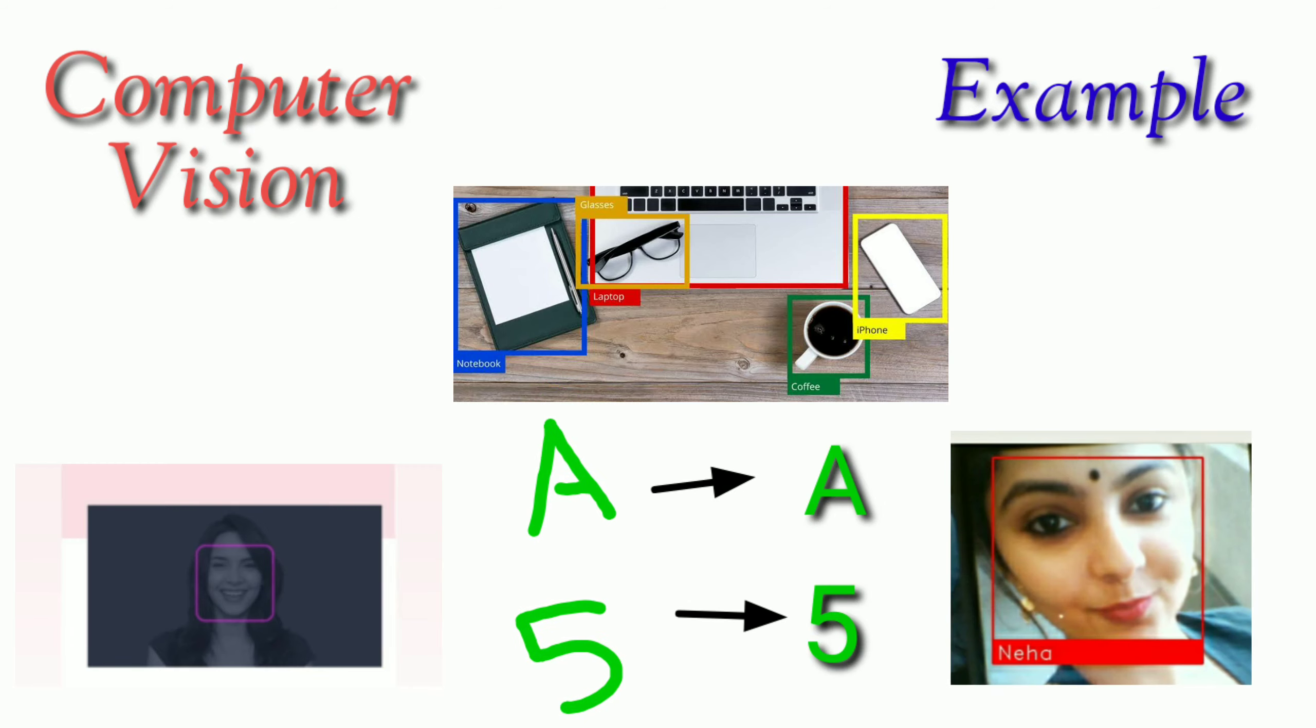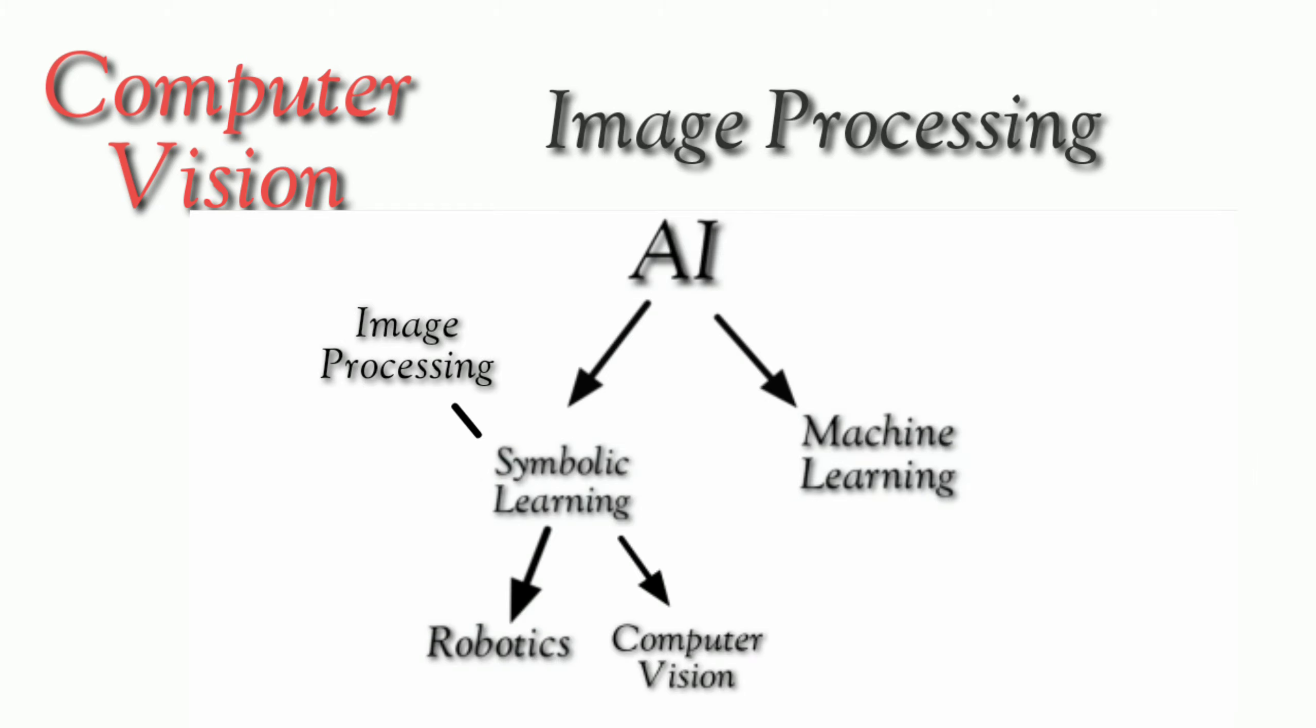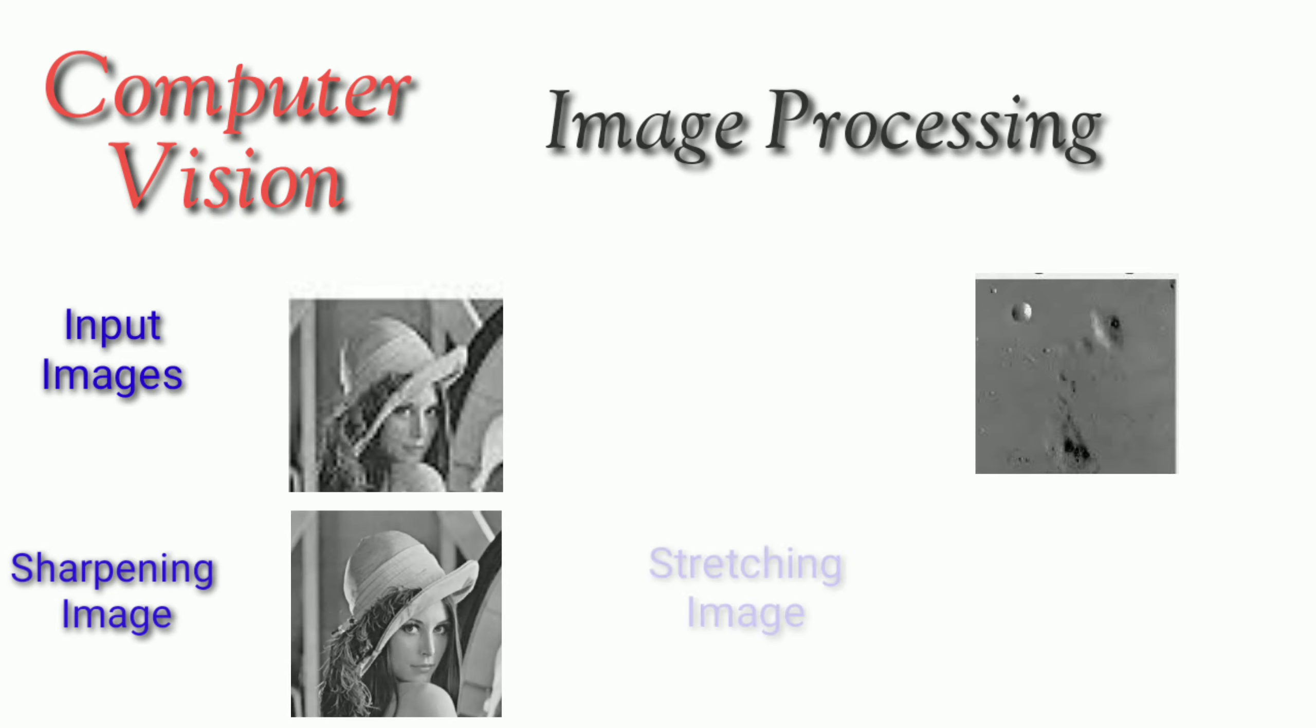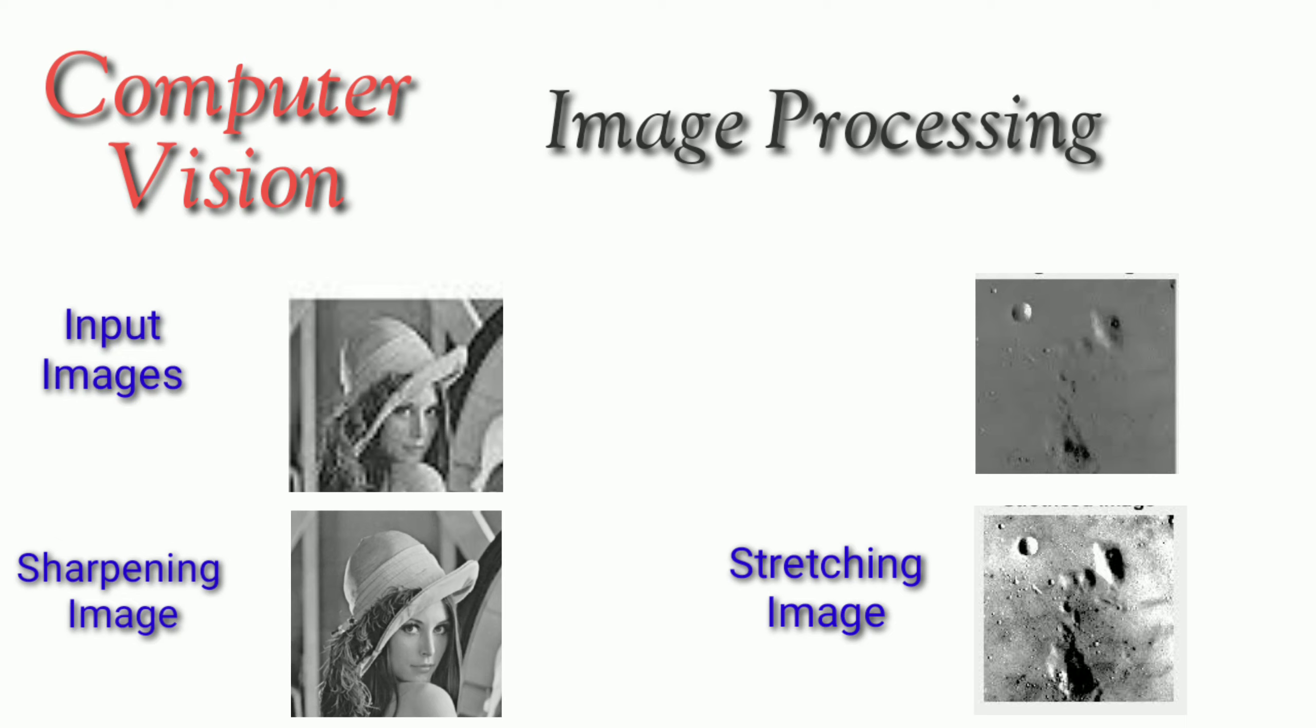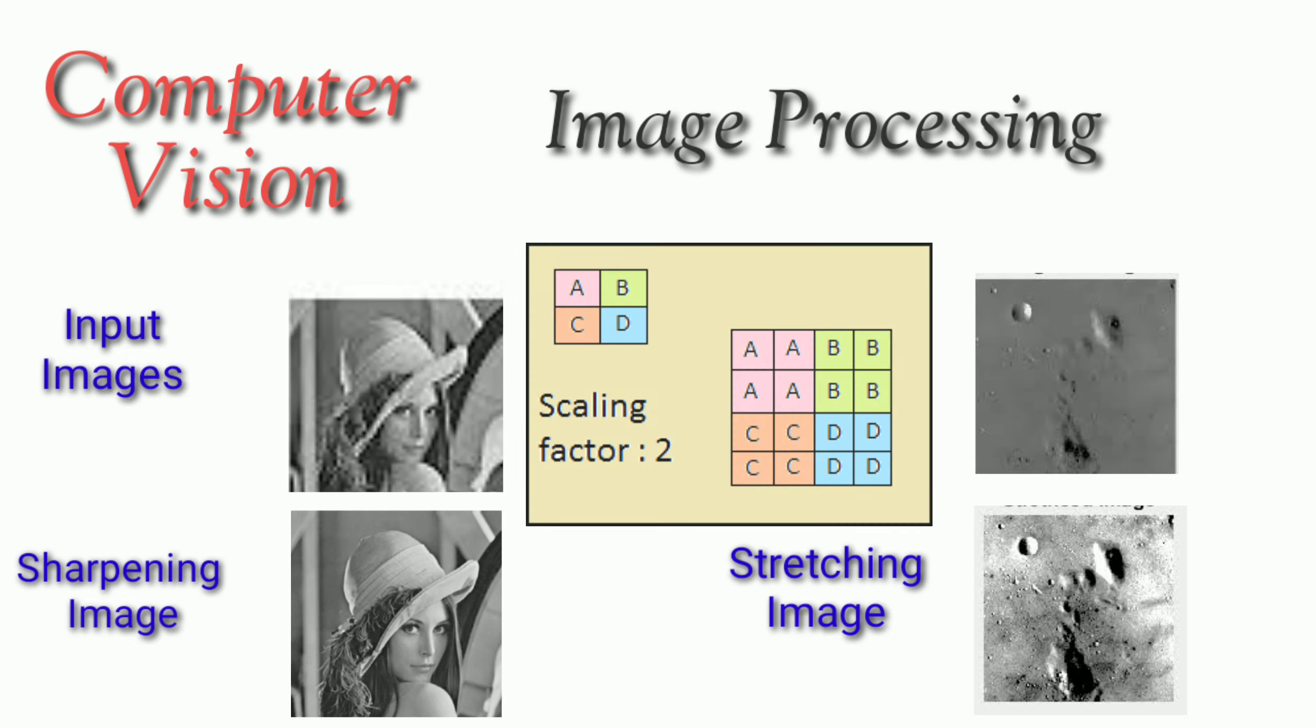One of the methods for computer vision is image processing which is used to focus on processing the raw input images. For example, it is used to apply transformations to images such as sharpening the image, stretching the image, rescaling image, zoom in, zoom out, changing the tones of image, etc.